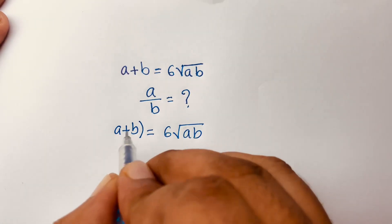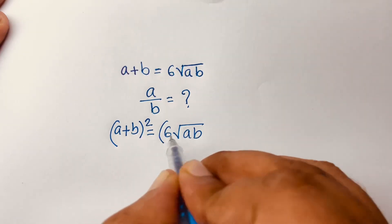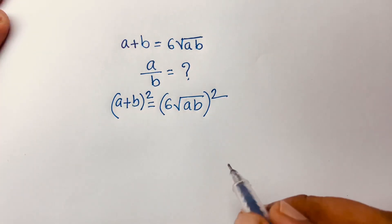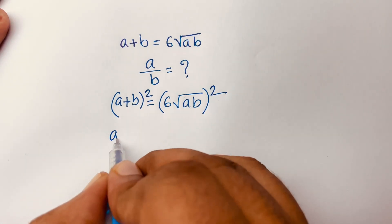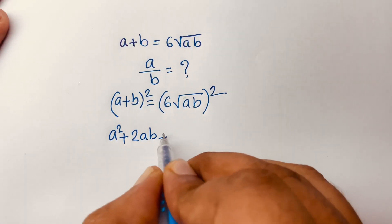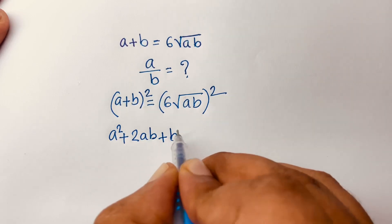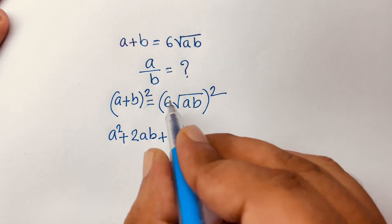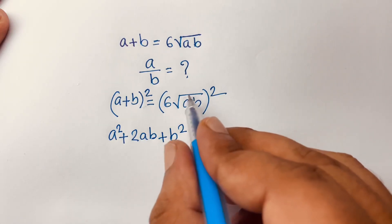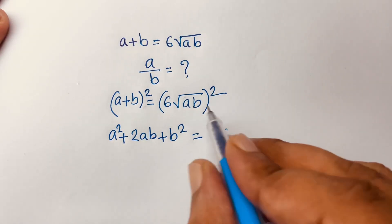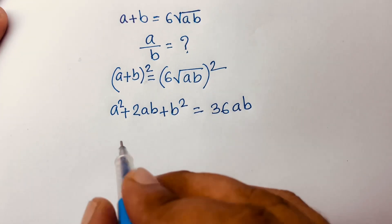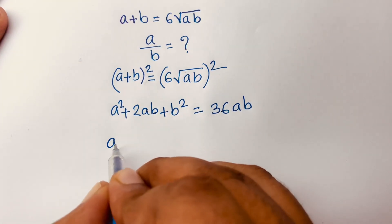So I square both sides. Then I can say here is: a plus b whole square equals a squared plus 2ab plus b squared, which is equal to 6 squared, which will be 36. And the square root cancels, so we find ab on the right side.